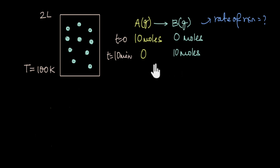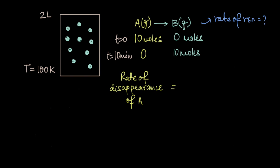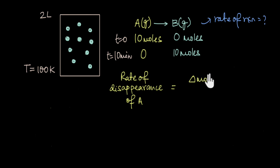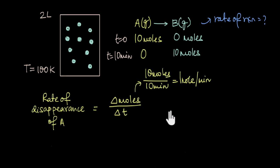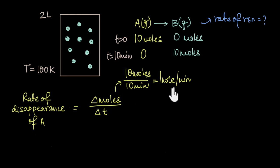The rate can be expressed as the rate of disappearance of A or the rate of appearance of B. The rate of disappearance of A is the change in moles of A divided by the change in time. 10 moles of A disappears in 10 minutes, so the rate of disappearance of A is 10 moles in 10 minutes, which equals 1 mole per minute.